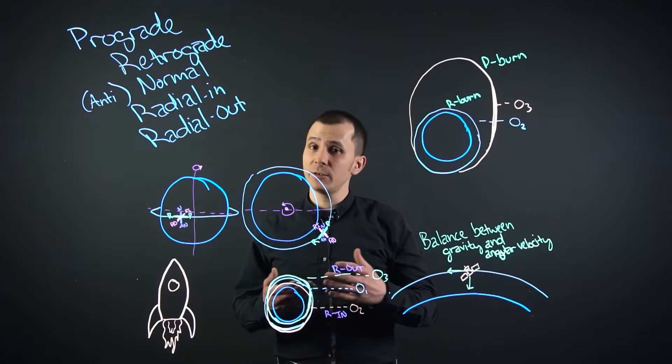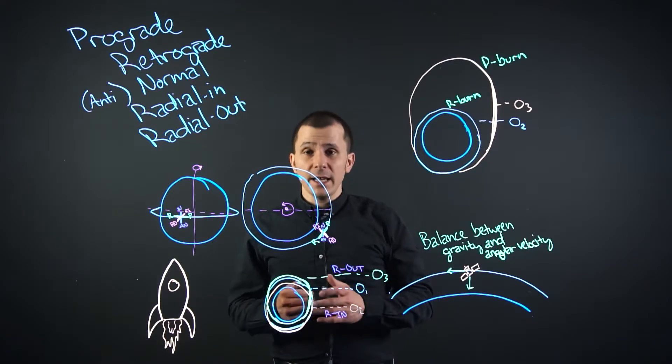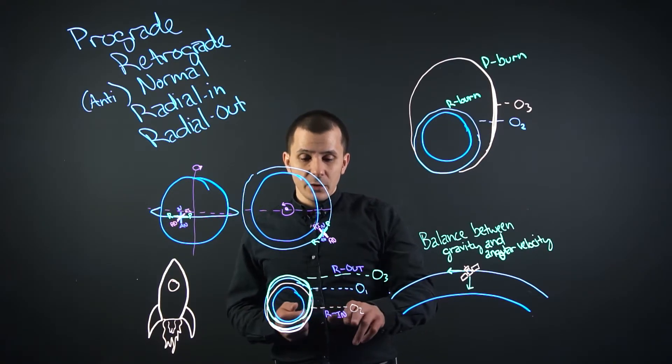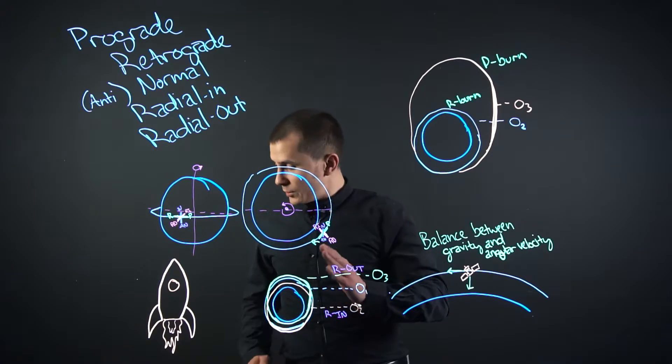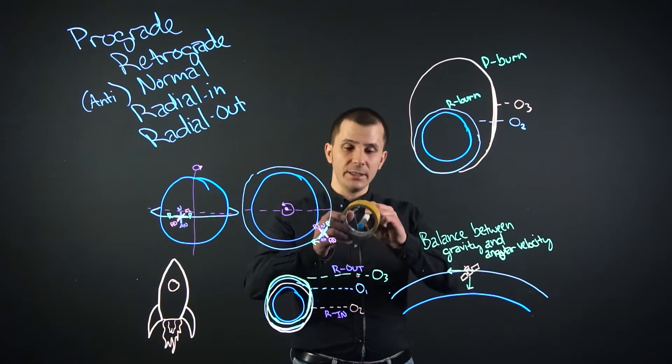Radial in and radial out are an interesting one. Radial in will actually cause your orbit to shift or to move. Let's take a look at a little reference here.